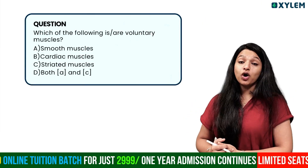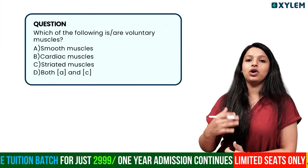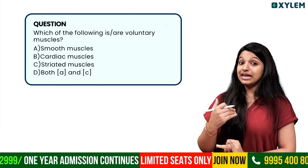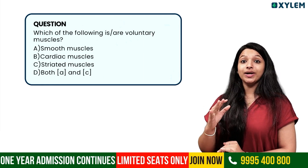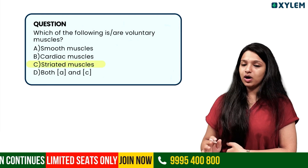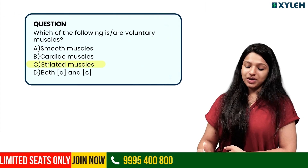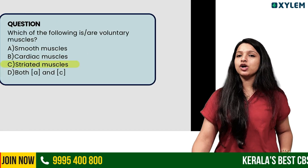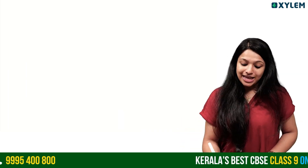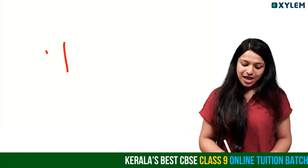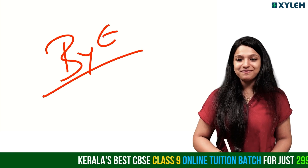Which of the following are voluntary muscles? Smooth muscle and cardiac muscle are not voluntary. Skeletal or striated muscle is the voluntary muscle. We are discussing these important questions and all details will be clear to you. Bye!